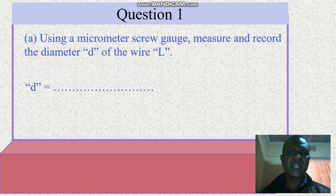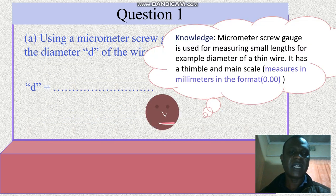Use a micrometer screw gauge. Measure and record the diameter D of the wire and put the values in the space. Micrometer screw gauge is used for measuring small lengths, for example diameter of thin wire. It has thimble and main scale and it measures in millimeters and the accuracy is to two decimal places, that is 0.00.